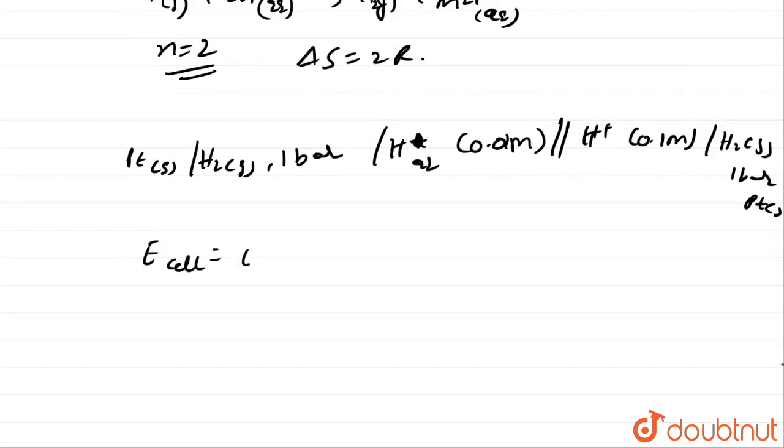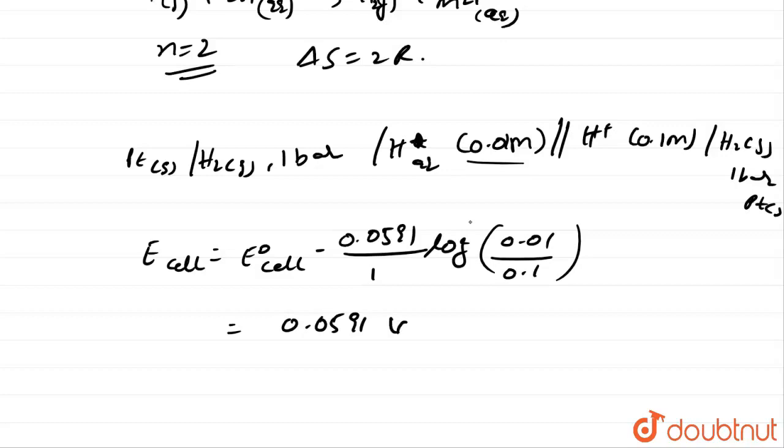E cell equal to E naught cell minus 0.0591 by 1, log of concentration terms. Reactants by products, 0.01 by 0.1. By calculating this one, what we will get is this one is 0, and we will get that 0.0591 volts. That means what delta G is less than 0. If E cell value is positive, then delta G is less than 0.